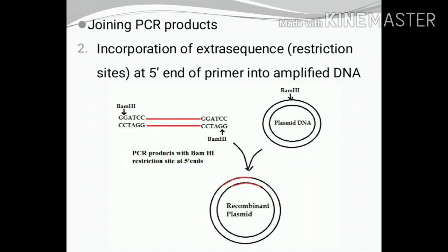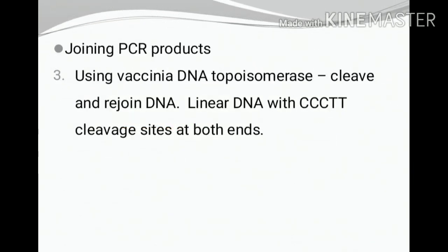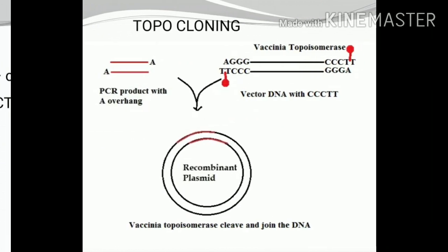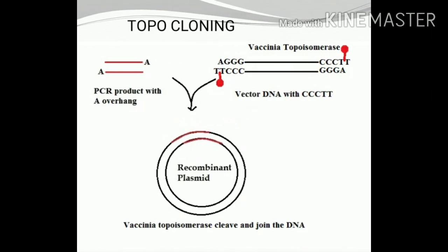The second method of joining PCR products is by incorporation of an extra sequence — that is, restriction sites at the 5-prime end of the primer — to get an amplified DNA with restriction sites at both ends. The third method is using Vaccinia DNA topoisomerase. The enzyme can cleave and rejoin DNA in 5 minutes. The linear DNA should have CCCTT cleavage sites at both ends. Vaccinia DNA topoisomerase recognizes the site CCCTT, cleaves within the site, and joins the PCR product containing a DNA overhang to give the recombinant DNA.